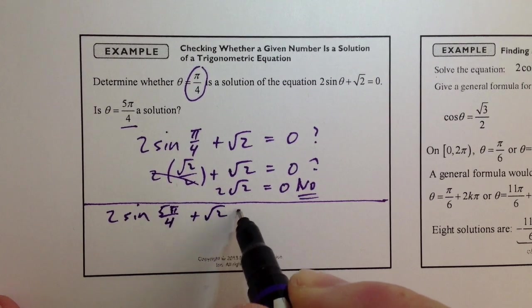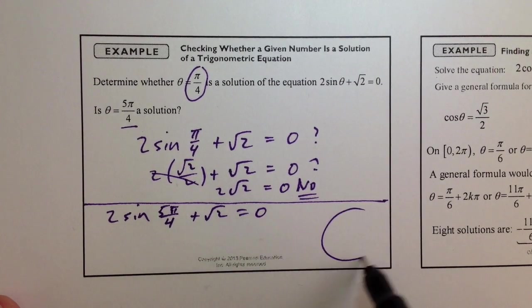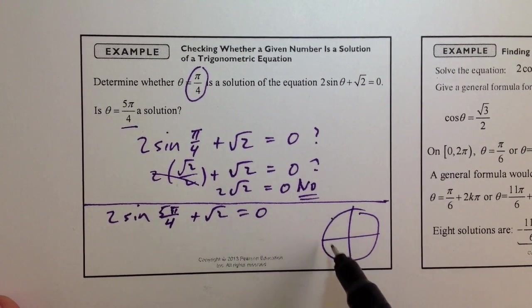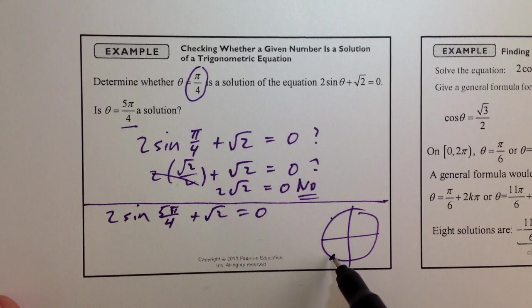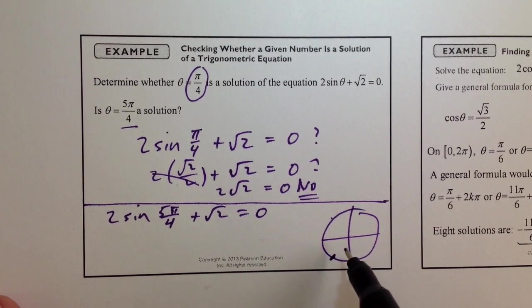we know that the sine of 5 pi over 4, if you look at a unit circle, 1, 2, 3, 4, 5 pi over 4 is over here. The sine is negative in the third and fourth quadrants, and this sine would be negative radical 2 over 2.